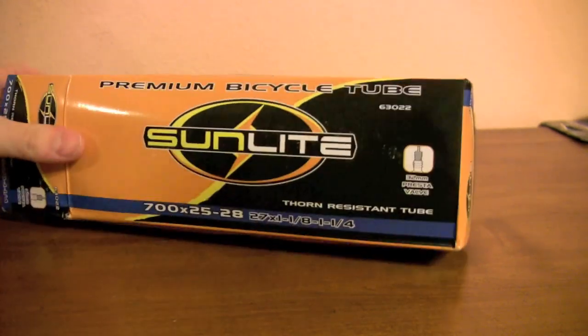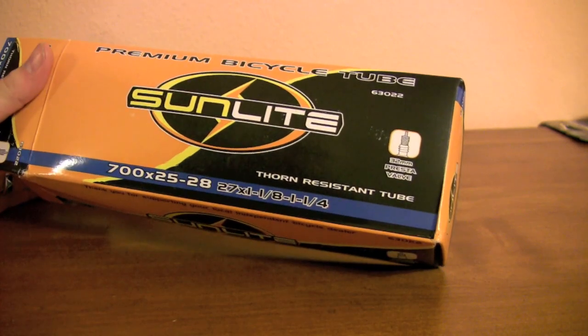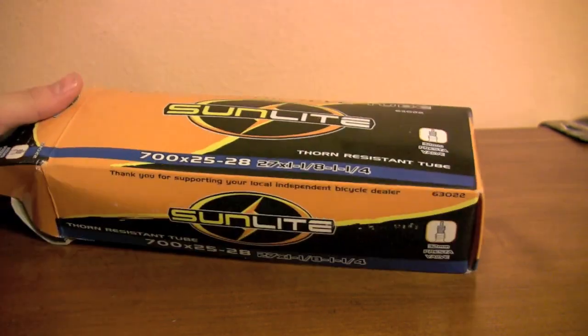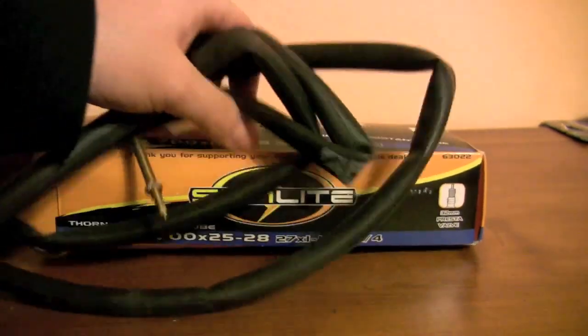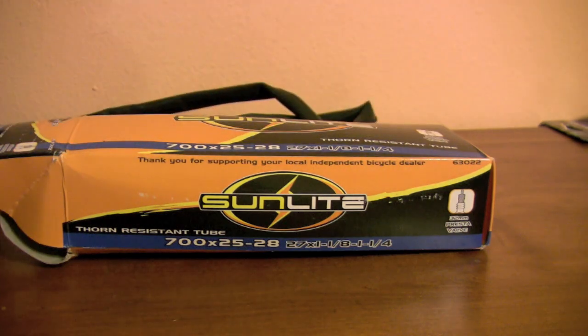This is a Sunlight thorn resistant tube. It's a road tube 700 by 25 to 28. Your normal tire looks something like this and can be prone to flats, thorns or pinches, all sorts of flats.